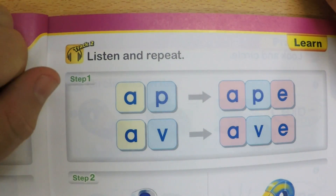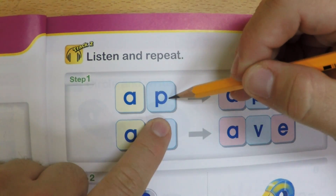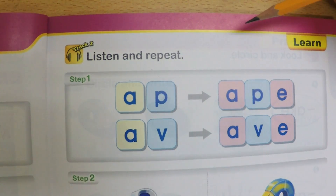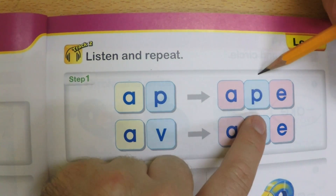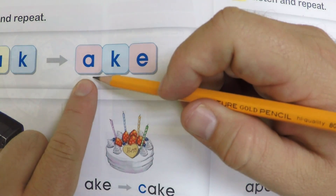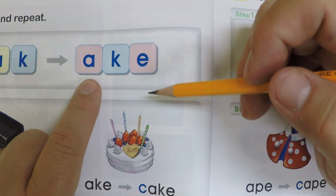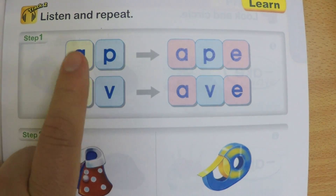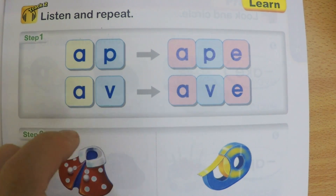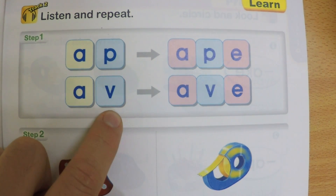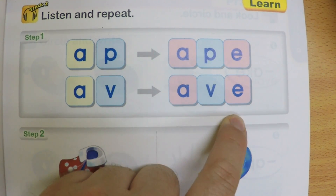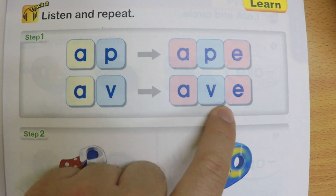Let's go to the next page. Now we're going to learn two more. -AP sounds like AP, but now with the long A it sounds like APE. Same over here — the long A sounds like APE. And -AV sounds like AV, but with the long A it sounds like AVE.